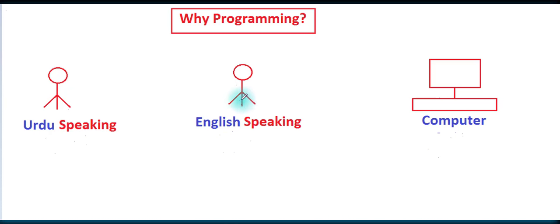پوری example کا نتیجہ یہ ہے: انگلیش speaking بندے کو جب انگلیش میں سمجھایا تب اسے پتہ چلا کہ اس کا task کیا ہے۔ اردو speaking بندے کو اردو میں سمجھایا۔ اسی طرح computer کو صرف ایک language آتی ہے — programming۔ جب computer سے کوئی کام کروانا ہو تو اسے programming میں سمجھانا پڑتا ہے، تب computer کو سمجھ آئے گی اور وہ اپنا کام کرے گا۔ یہی وجہ ہے کہ ہم programming کرتے ہیں۔